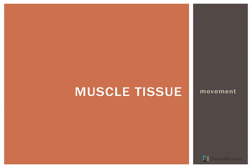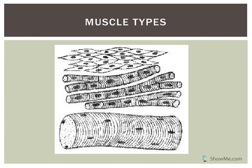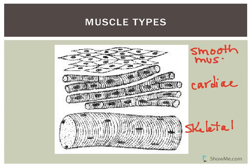Muscle tissues have three types, all designed to be contractile — they contract to cause movement. The first type is skeletal muscle, the second is cardiac muscle, and the last is smooth muscle. It's important to always use the full names of tissues.